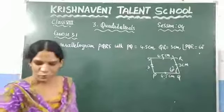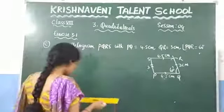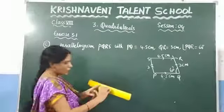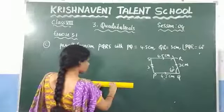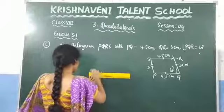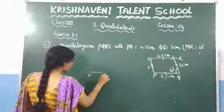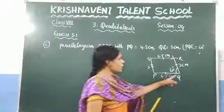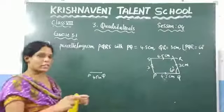Let us draw the parallelogram. We need to take a length of 4.5 cm. In between 4 and 5, in the middle, you will have a mark that will be 4.5. Take a length of 4.5 — this is PQ which is 4.5 cm. After that, we need to draw an angle of 60 degrees with the help of the protractor.